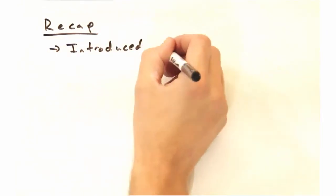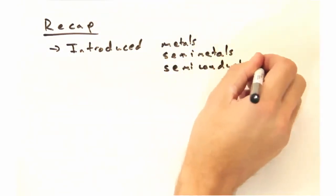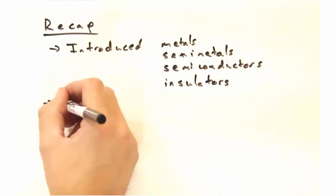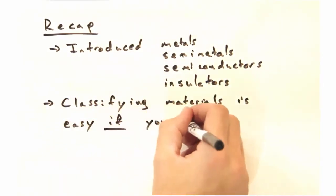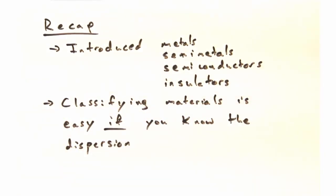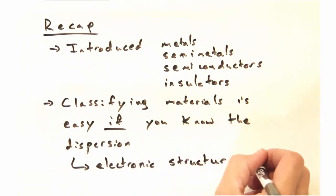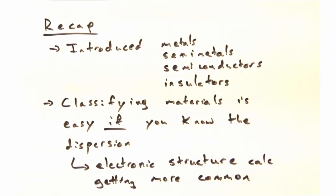So let's do a recap. Today we introduced metals, semi-metals, semiconductors, and insulators. In general, I'd say that classifying materials is pretty easy if you know the dispersion, but that it's pretty tricky to predict in advance. Luckily, electronic structure calculations are getting more and more common. So common that we'll have a week on them later in the semester.